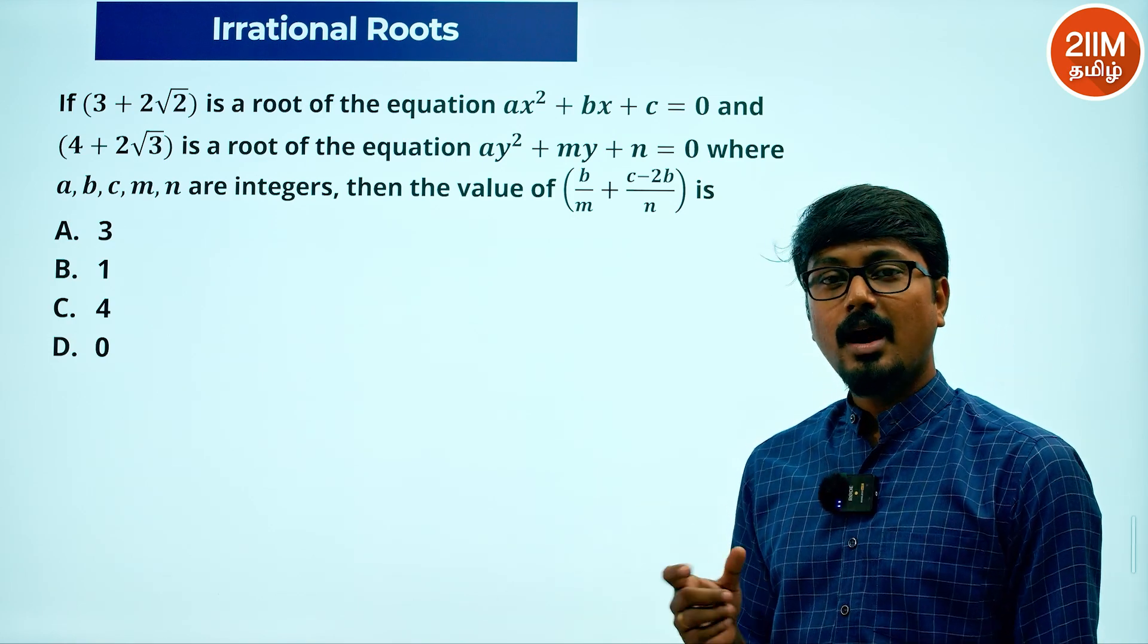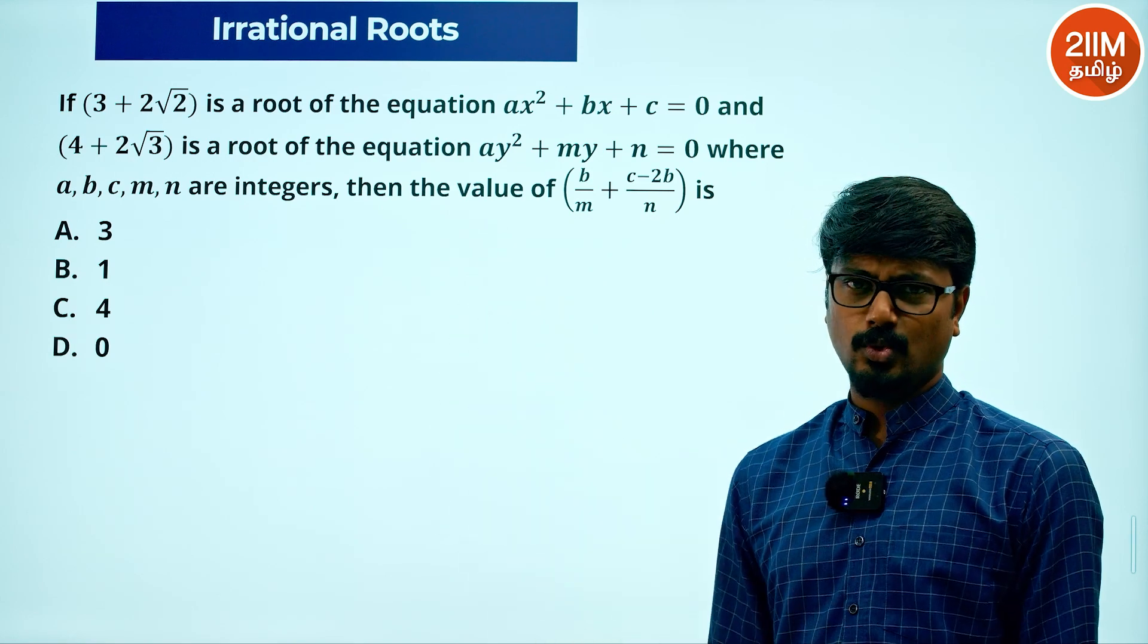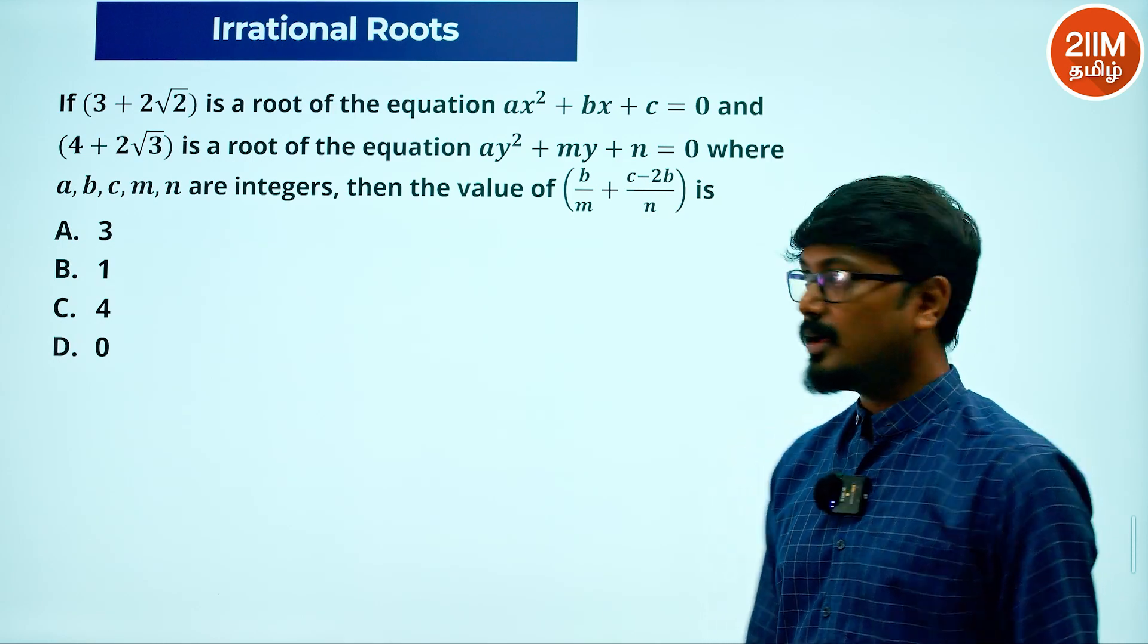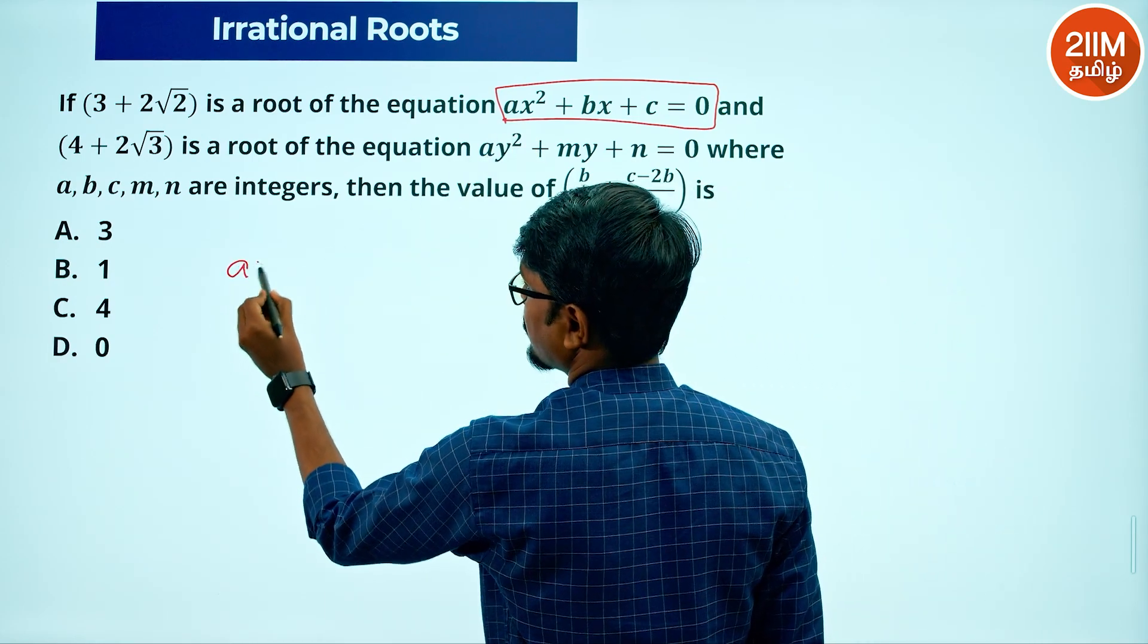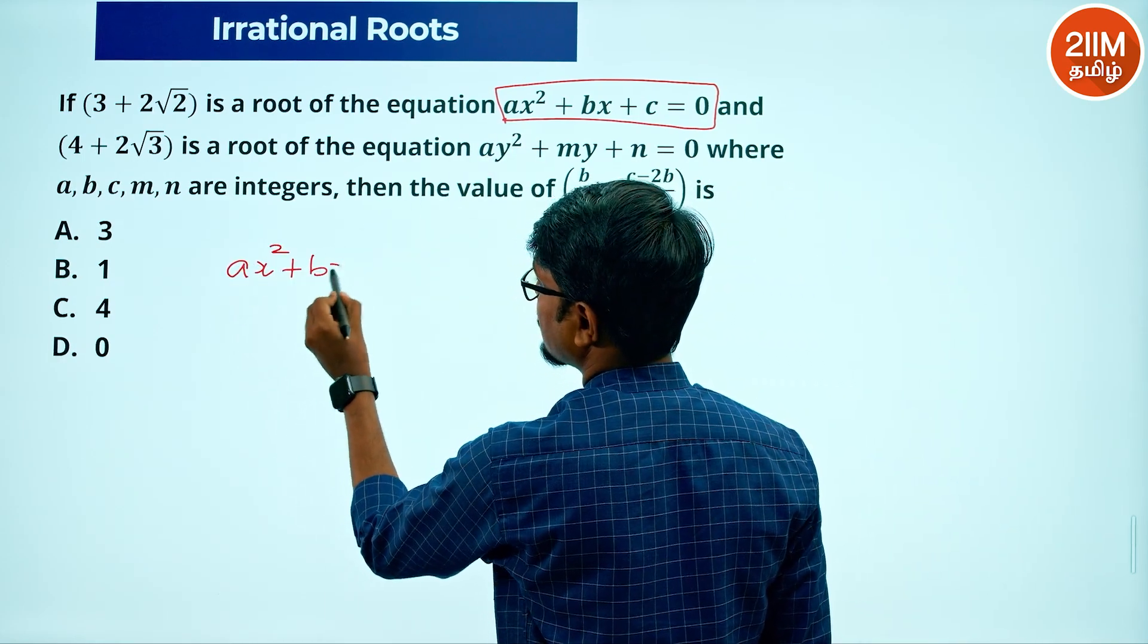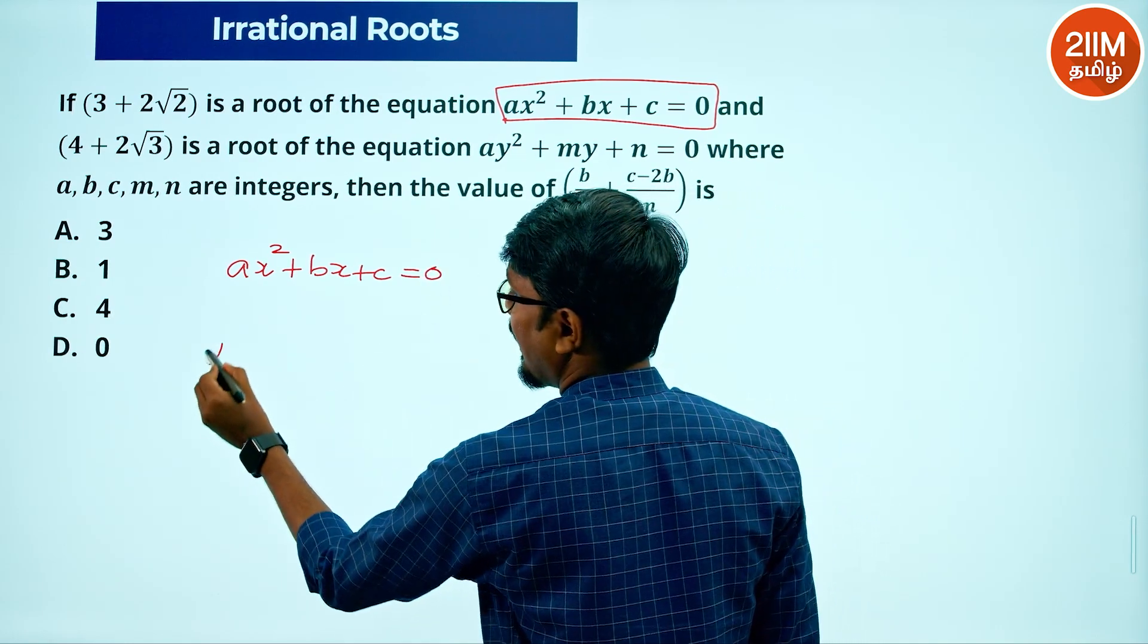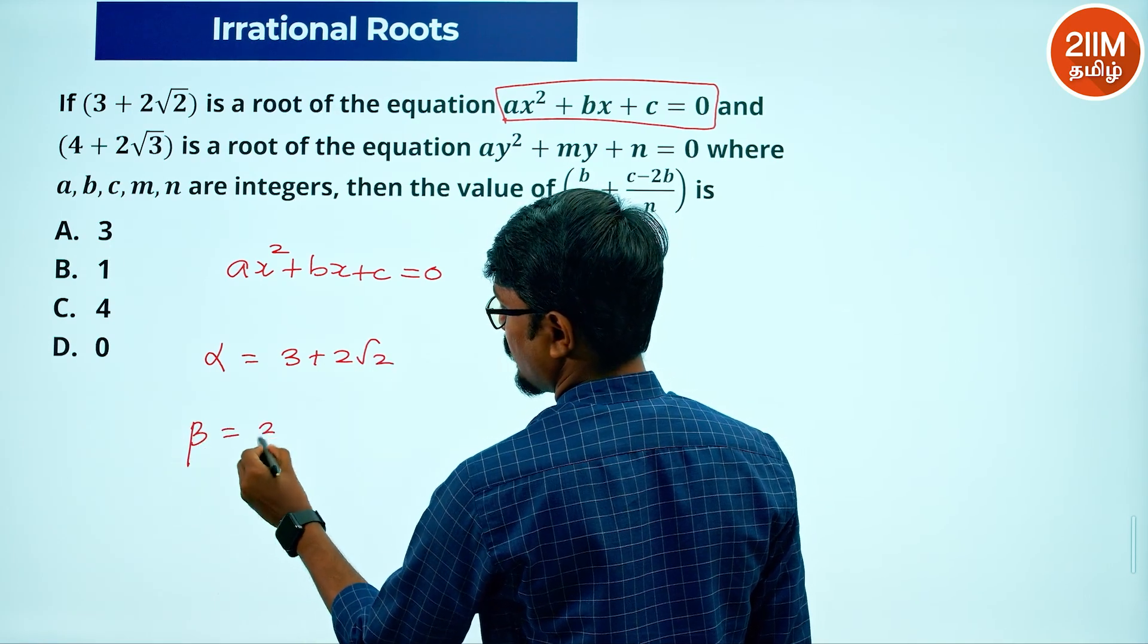One of the quadratic equations is there. That is one of the roots. So if we have 3 plus 2 root 2, we get the conjugate root as 3 minus root 2. Next, ax squared plus bx plus c equals 0. So we get this equation where alpha is one root, 3 plus 2 root 2, and beta is now 3 minus 2 root 2.